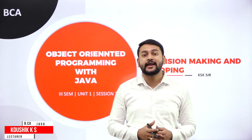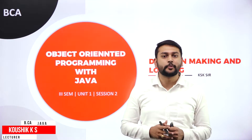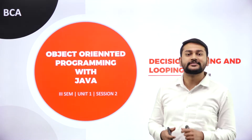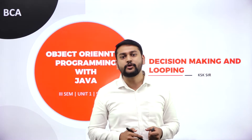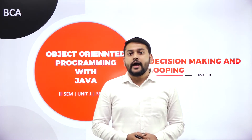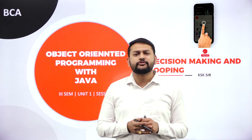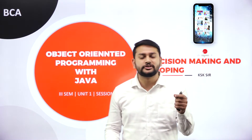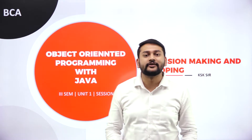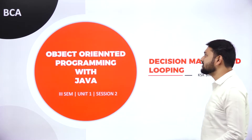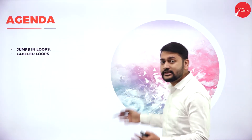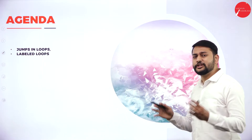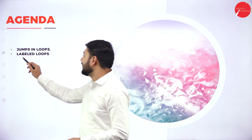Hello everyone, welcome to the second session on decision making and looping. I have done one more session on this, so if you have not watched that, I request you to go back and check session one, where I discussed while loop, do-while, and for loop. Please don't forget to subscribe and click the bell button. In this session, I have two important things: jumps in loops and labeled loops.